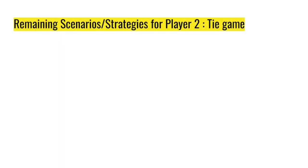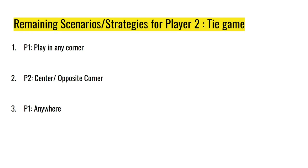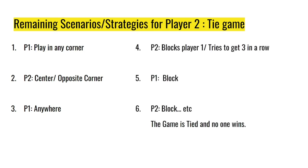This is Zach, continuing the regular Tic-Tac-Toe strategies. What's left are the scenarios for player two, or a tied game for player one. Player one playing in any corner gives him an advantage in almost six positions player two can move to. The two remaining positions are the center and the opposite corner from X's first move. If player two moves to the center or opposite corner, the game goes back and forth with each player blocking the other until there are no more boxes — and the game is tied. That is the strategy for player two to avoid a loss: just play in the opposite corner or the center.